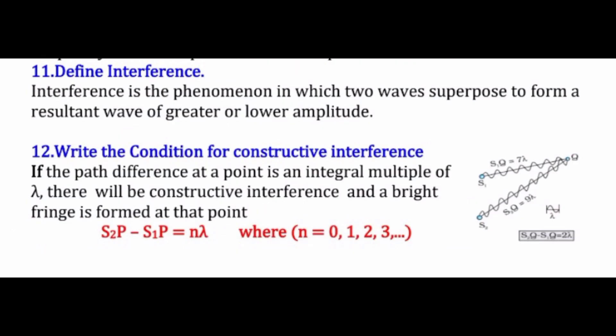The next question is: define interference. Interference is the phenomenon in which two waves superimpose to form a resultant wave of greater or lower amplitude. The process of superimposing two waves is called interference.